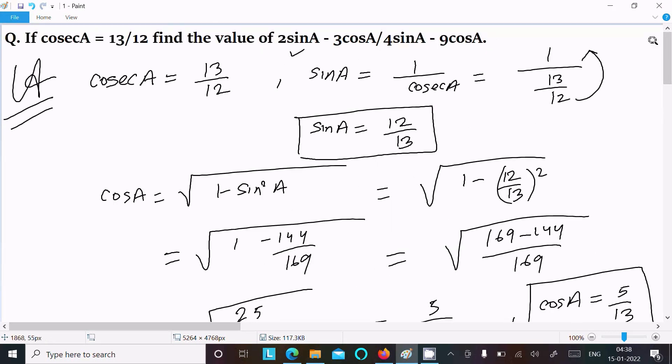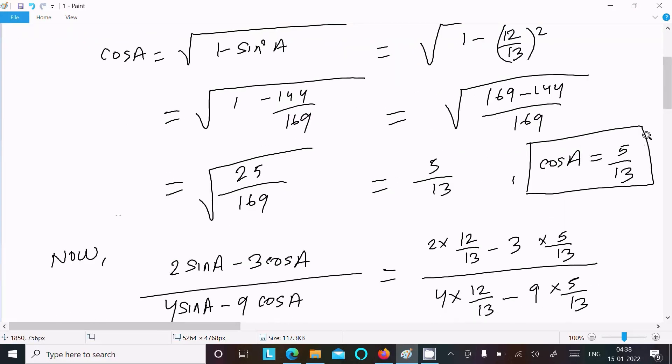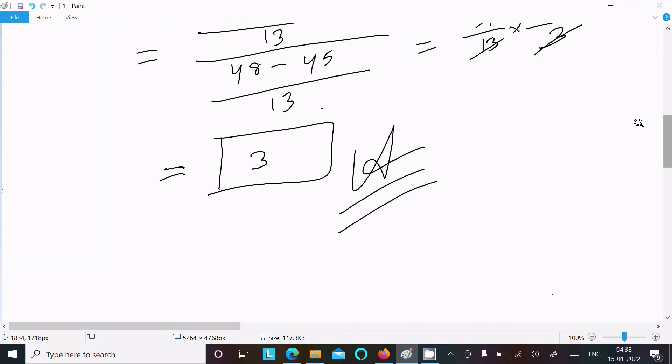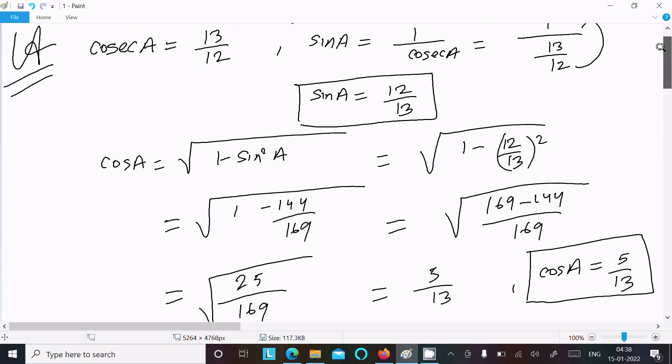To repeat: write the given cosecA, then calculate sinA. Use the formula √(1 - sin²A) to find cosA = 5/13. Write the given expression, put in the values, and you get 3 as your answer. This is the way we can find it.